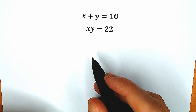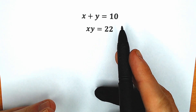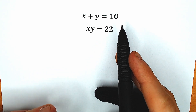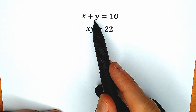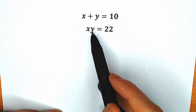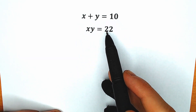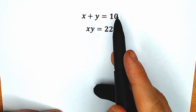Hello everyone! Welcome back to my channel. Hi, in mathematics! Today we have a very interesting and tricky question: x plus y equal to 10, and the product x times y equal to 22, and we need to find our x and y.